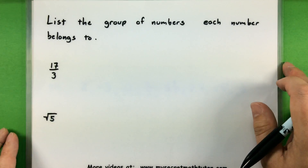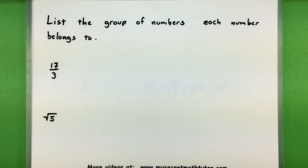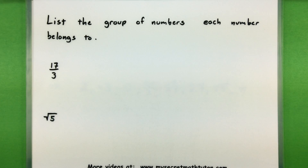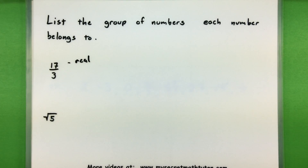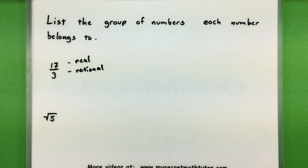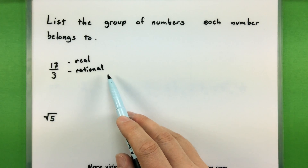Let's give this a try with a few different numbers. We want to list the different groups that each number belongs to. Starting with 17 thirds — first I'd start with the largest group, which would be real numbers. Then moving down: can I write it as a fraction or not? This one's already a fraction, so it goes into the rational category. Is it an integer, a natural number, zero, or the negative of a natural number? Unfortunately it's not, so I'll stop there. So 17 thirds is a real number and a rational number.